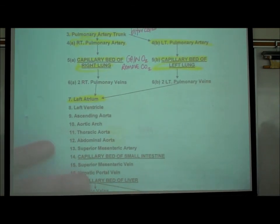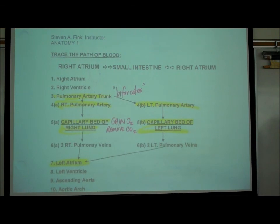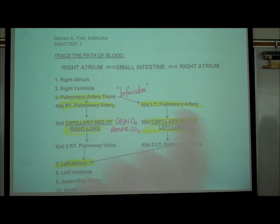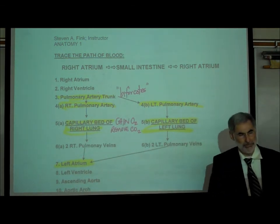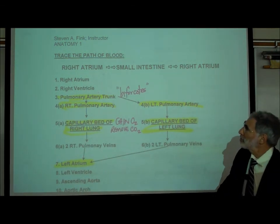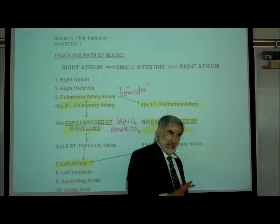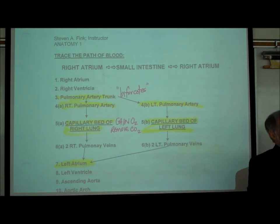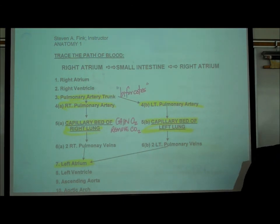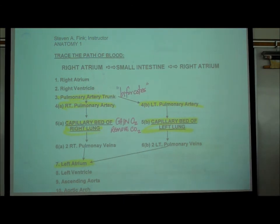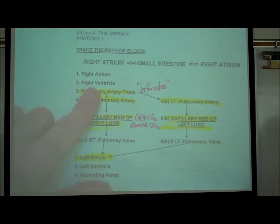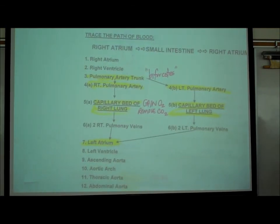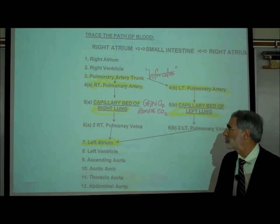Now the other map quest is on side 1 of the handout: trace the path of blood from the right atrium to the small intestine back to the right atrium. Notice we're beginning on the right pump, not the left. The right pump has to send blood through the lungs first. So: right atrium → right ventricle → right ventricle ejects blood into the pulmonary artery trunk.